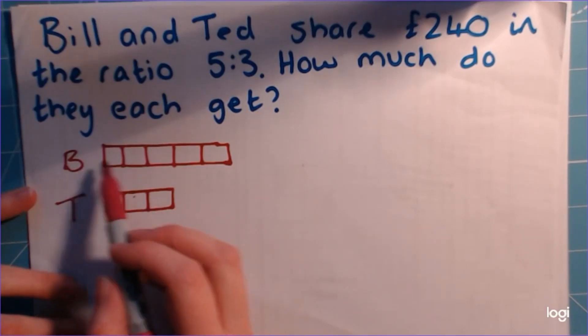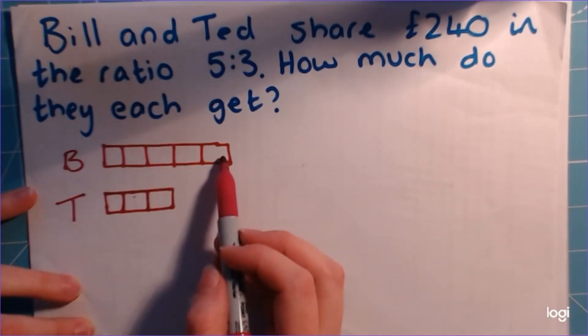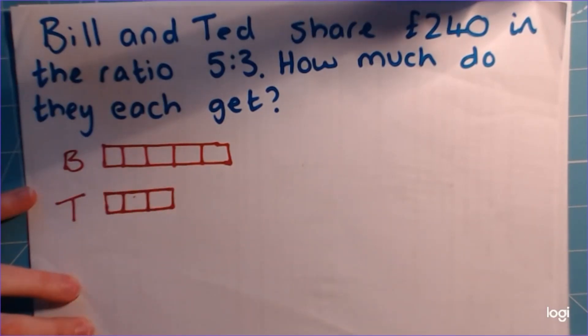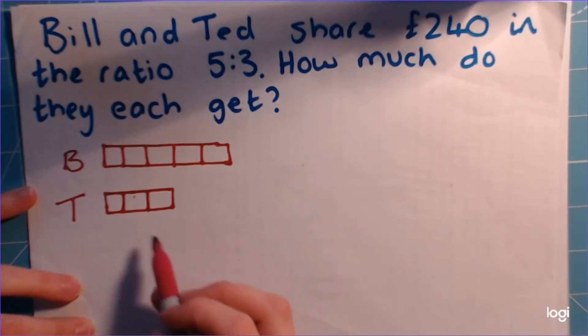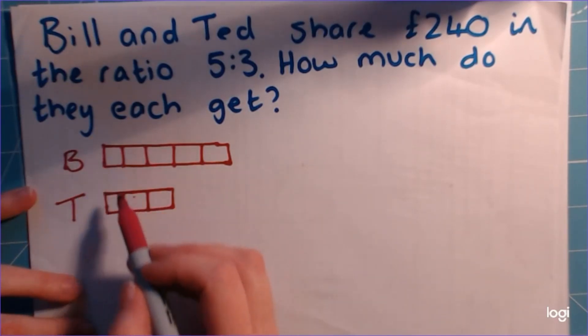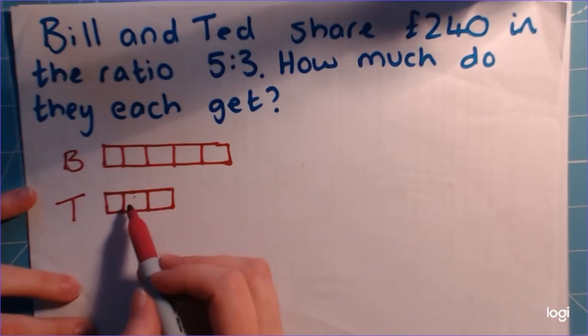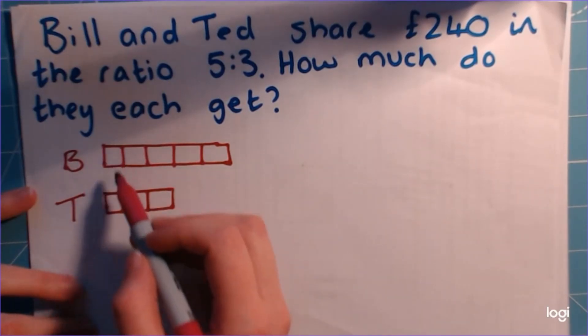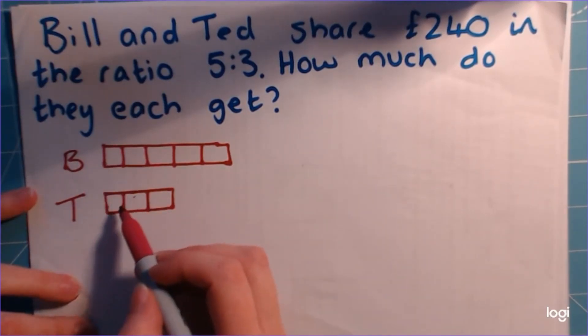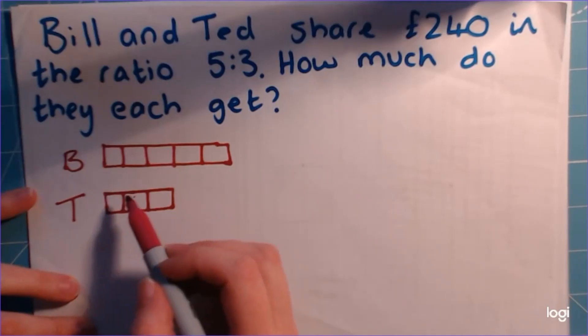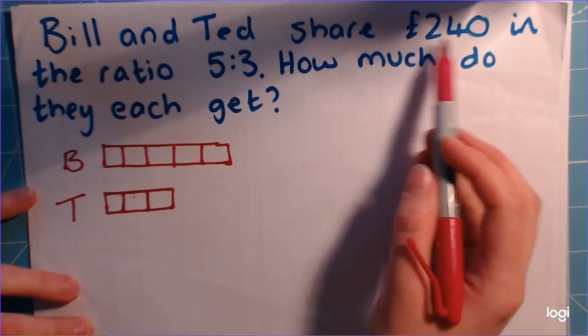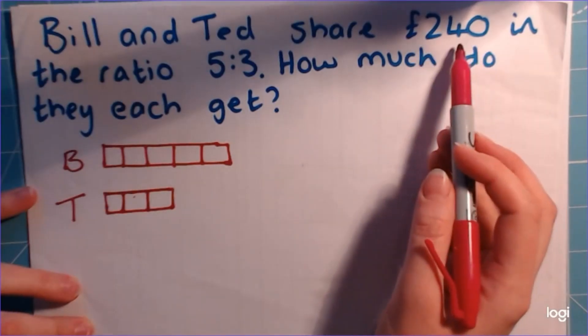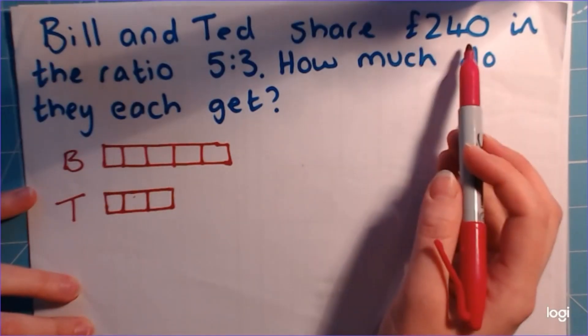So for every £5 Bill gets, Ted gets £3. And we could do that — we could say 5 for you, 3 for me, 5 for you, 3 for me, and so on till all the money was gone. But that would take quite a long time.